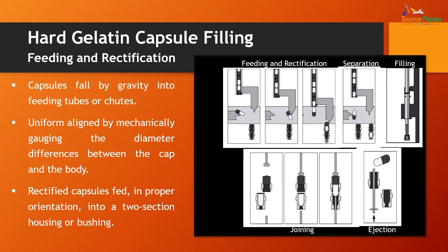In the feeding and rectification step, capsules fall by gravity into the feeding tubes and align uniformly by mechanically gauging the diameter differences between the cap and the body. The rectified capsule is fed in proper orientation into a two-section housing or bushing, followed by separation, filling, joining, and ejection.